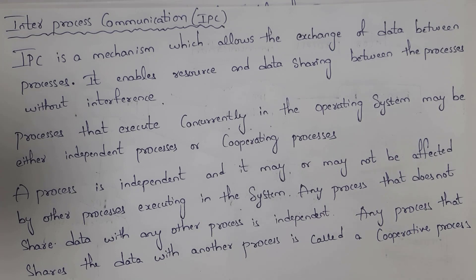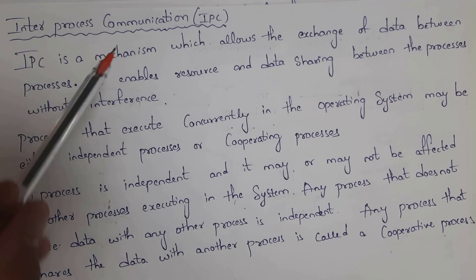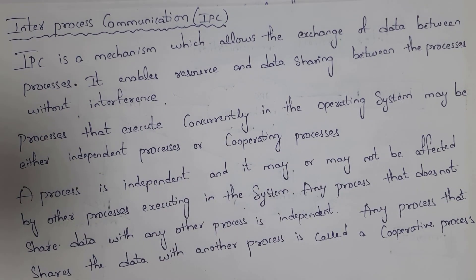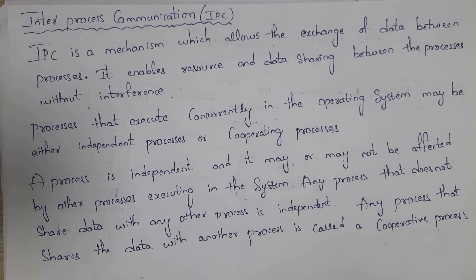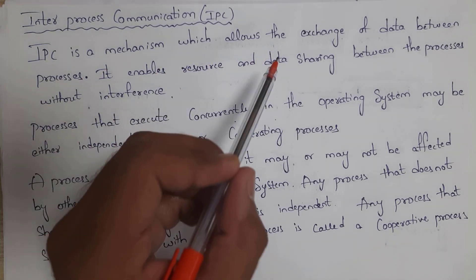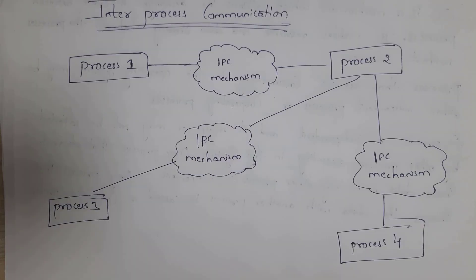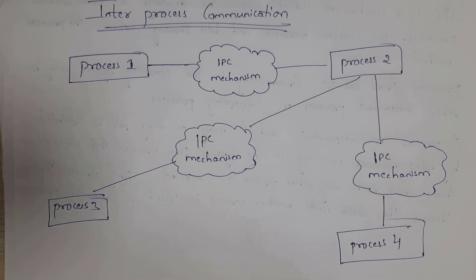First I will explain what is inter-process communication. But before that you need to know what is the meaning of process. A program which is under execution is known as a process. IPC is a mechanism which allows the exchange of data between processes. By using inter-process communication we can exchange resource and data between multiple processes without any interference. Here is a diagram of inter-process communication.